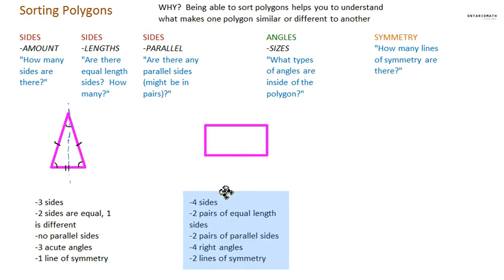So, hopefully, your answer looks like mine. So, I'm asking myself, how many sides are there? There are four sides. And are there equal length sides? Yeah, there are two pairs. One pair is here. These two sides are equal. And another pair is here. These two sides are equal.